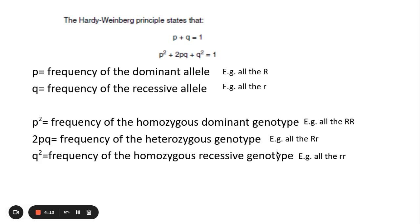2pq is the frequency of the heterozygous genotype, so for example in this example it would be big R and small r. And then q squared is the frequency of the homozygous recessive genotype, for example small r small r.